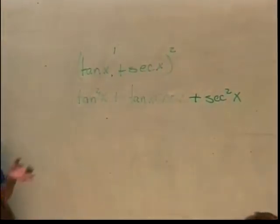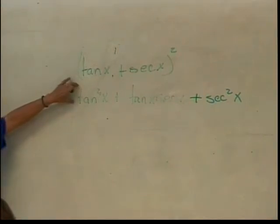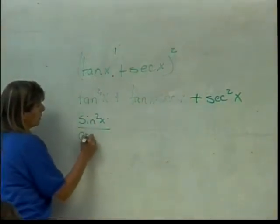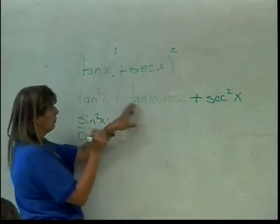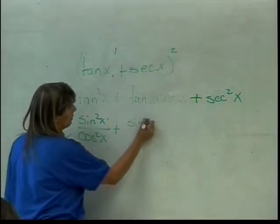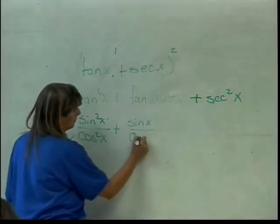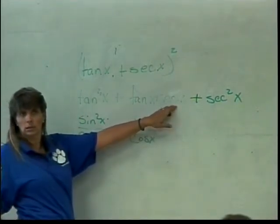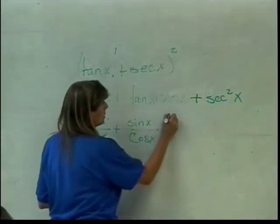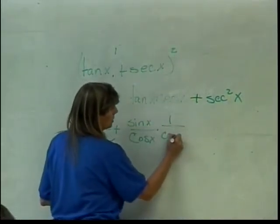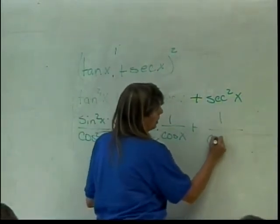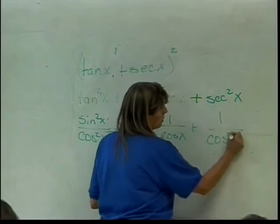Now I can put it in sines and cosines. Tangent is what in terms of sines and cosines? So this would be sine squared of x over cosine squared of x. Plus what you just told me, tangent was sine of x over cosine of x. What's secant of x? One over cosine of x? Okay, so I'll have one over cosine of x. And then secant of x you just told me was one over cosine of x, so secant squared will be one over cosine squared of x.